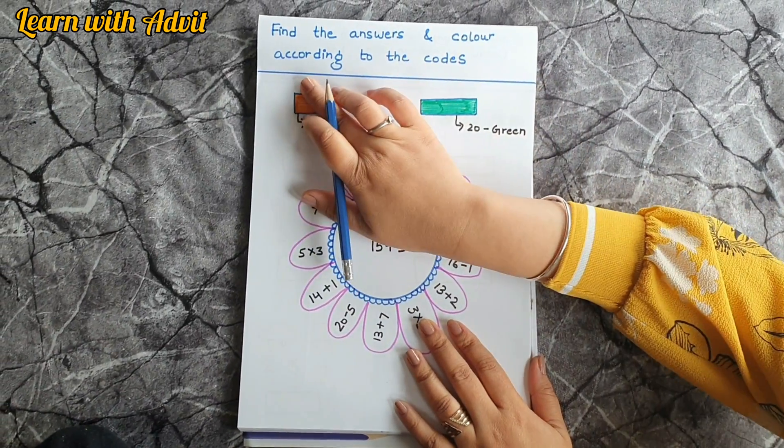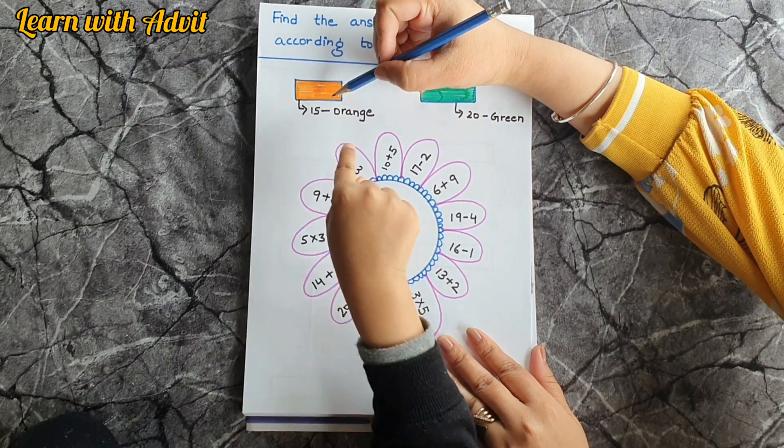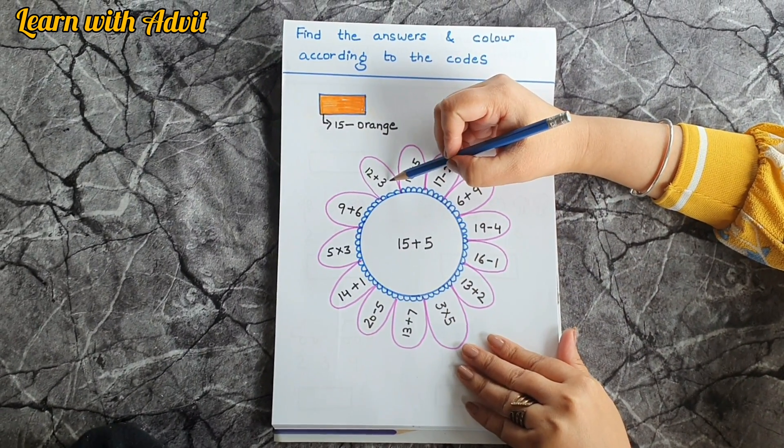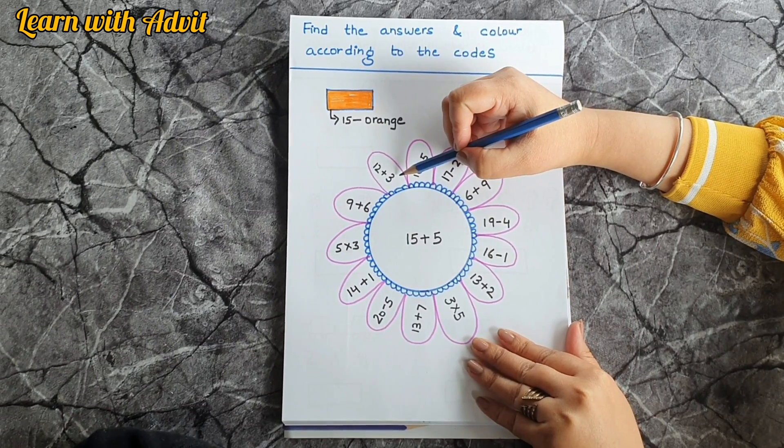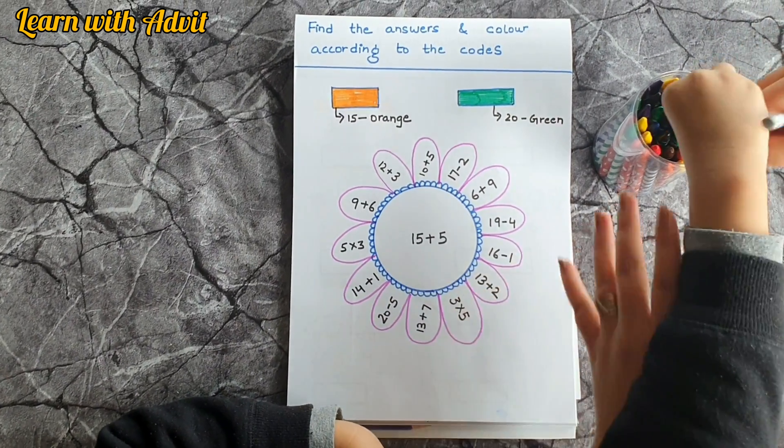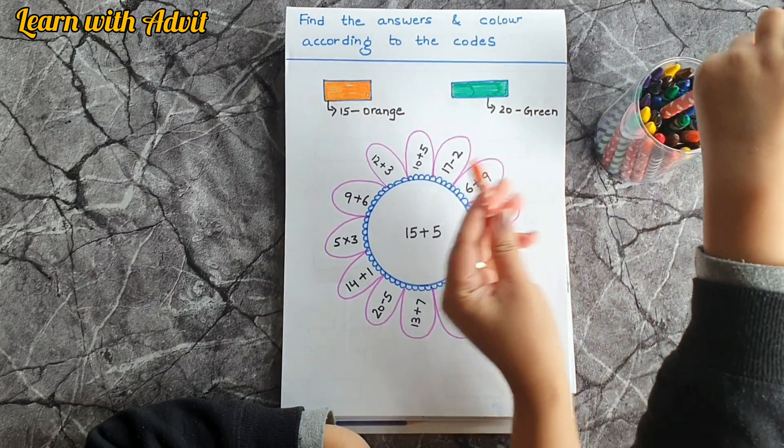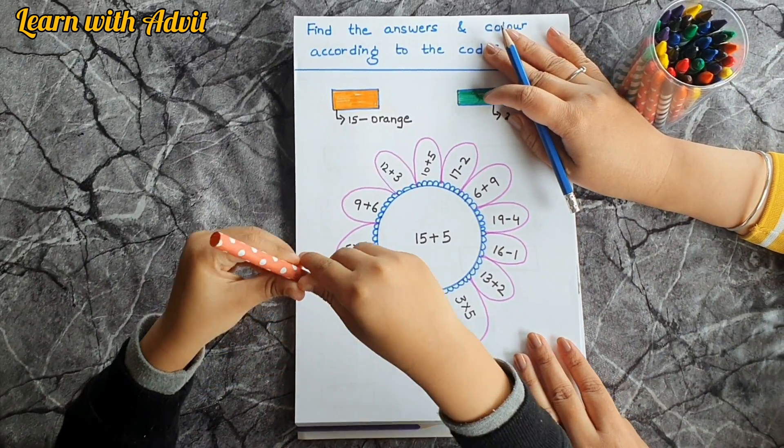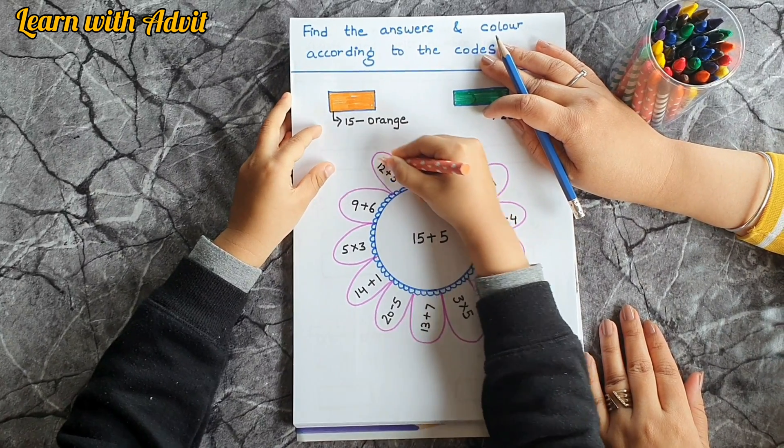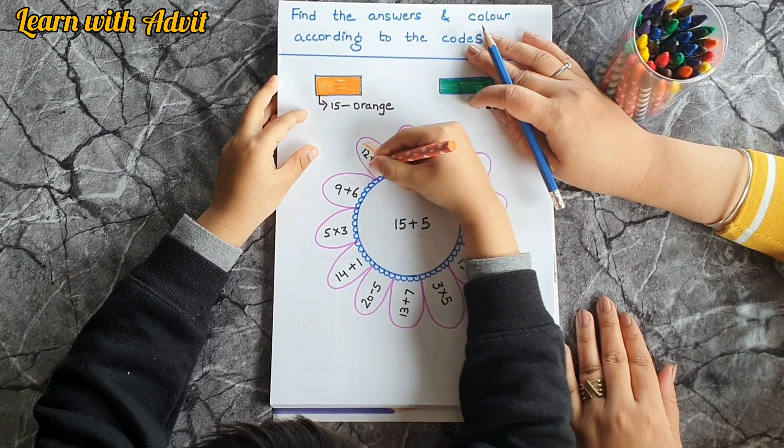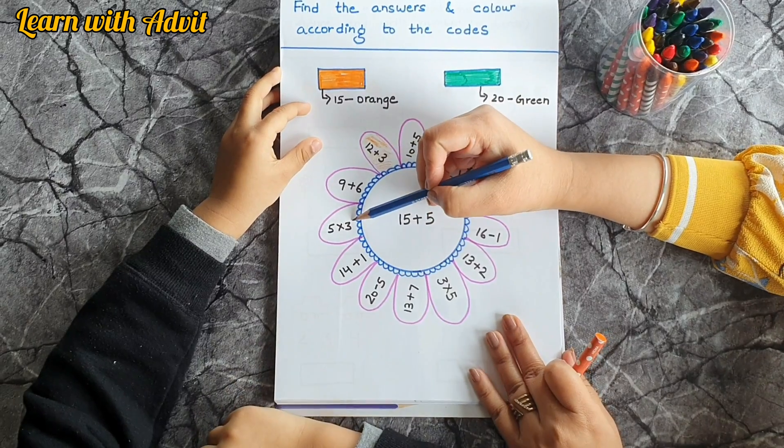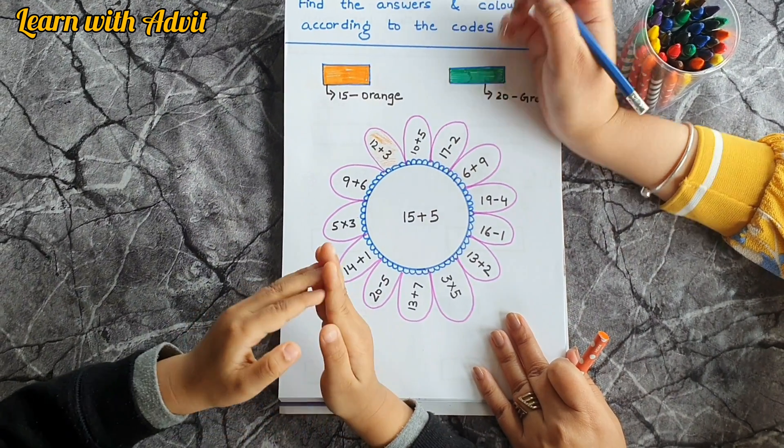So the first sheet: find the answers and color according to the codes. Okay, 15 is orange and 20 is green. So what you have to do, 12 plus 3 is 15, orange, so you have to color the petal with the color orange. So 12 plus 3 equals 15, and we colored orange. Yes, around the 3 and around the plus, around the 12. Very good.